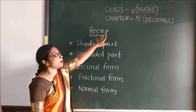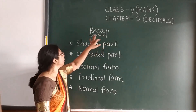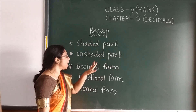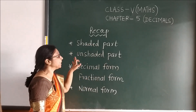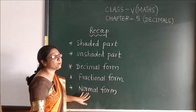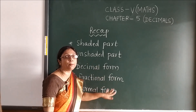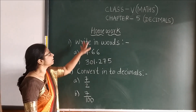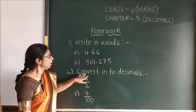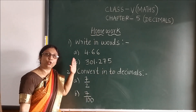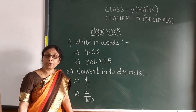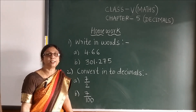This is a short recap of what we have studied today. We have studied shaded parts, unshaded parts, decimal form, fractional form, and normal form. Children, you have to write in words or convert into decimal in your rough copy. We will meet in the next video. Till then, take care.